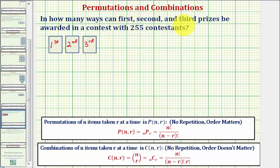In how many ways can first, second, and third prizes be awarded in a contest with 255 contestants?